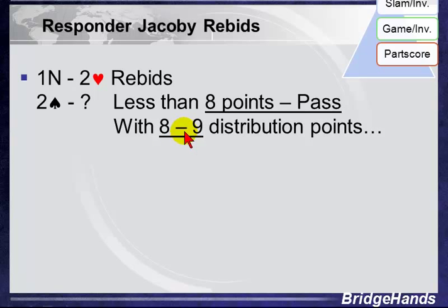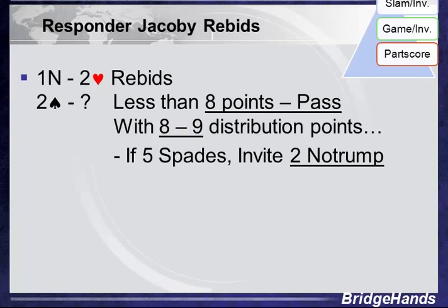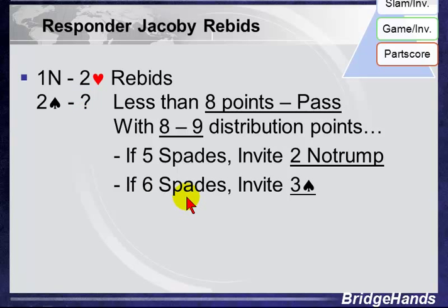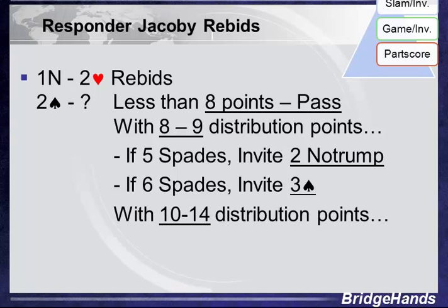With eight or nine points and five spades, responder bids two hearts, opener transfers to two spades, and responder rebids two no trump — inviting game. With six spades and eight or nine points, responder transfers and then rebids three spades, inviting game: knowing opener has at least two cards, you have an eight-card fit. With a minimum, opener passes; with a maximum, they accept and bid four spades.